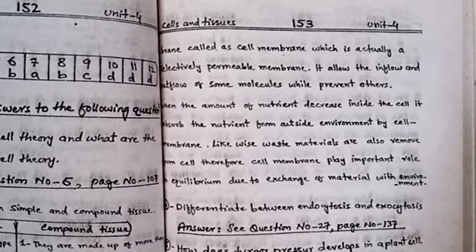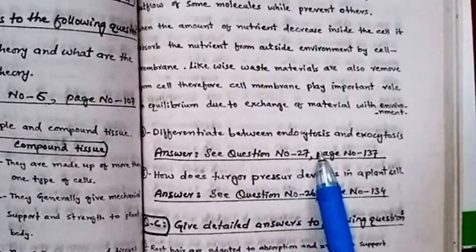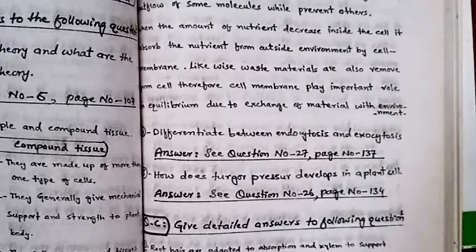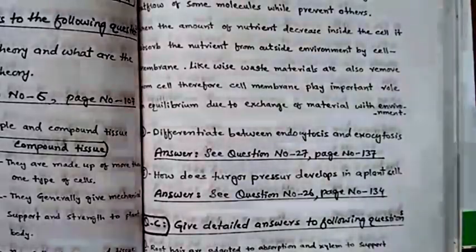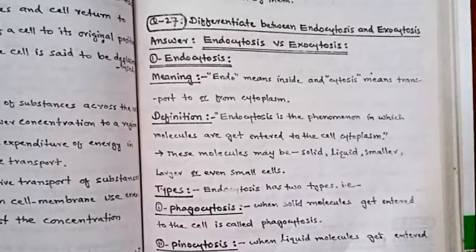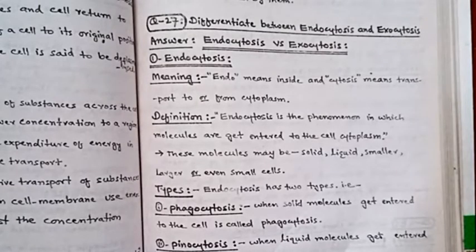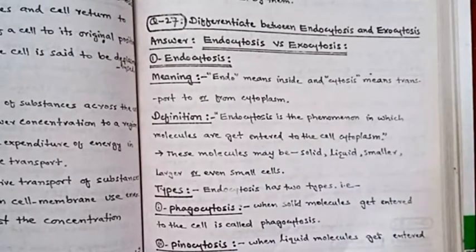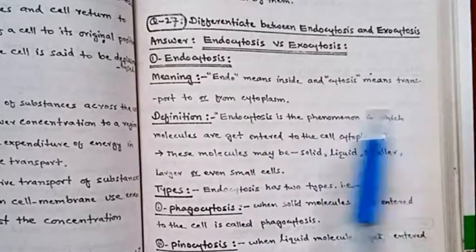Next question: differentiate between endocytosis and exocytosis. This question answer is on page number 27. We will discuss endocytosis versus exocytosis. Endo means inside and cytosis means transport.